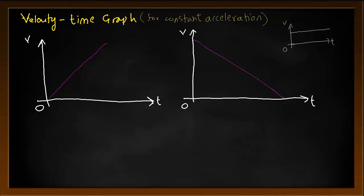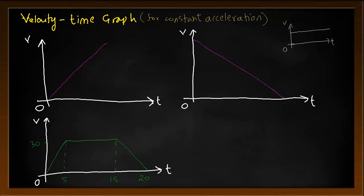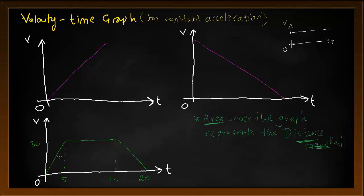This is the journey for a vehicle that starts from rest, then accelerates for 5 seconds reaching a velocity of 30 meters per second, then maintains this velocity — zero acceleration — for the next 10 seconds, and finally decelerates to rest with negative acceleration. There is a very important rule regarding velocity-time graphs: the area under the graph represents the distance traveled. For this vehicle, the first area is a triangle: half times base times height. The middle area is a rectangle: length times breadth. The final area is another triangle: half times base times height. Adding the three areas gives the total distance traveled by the object.